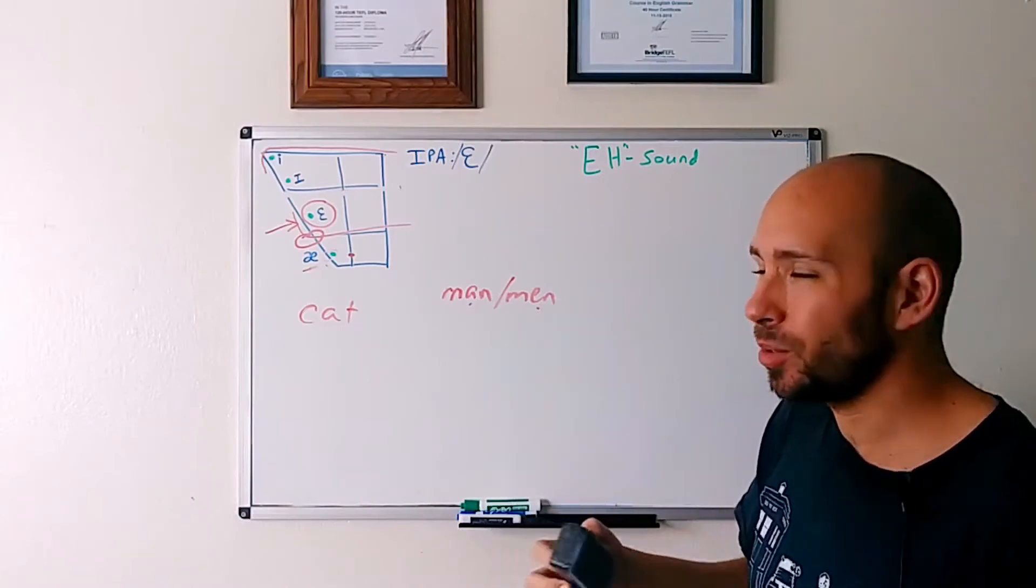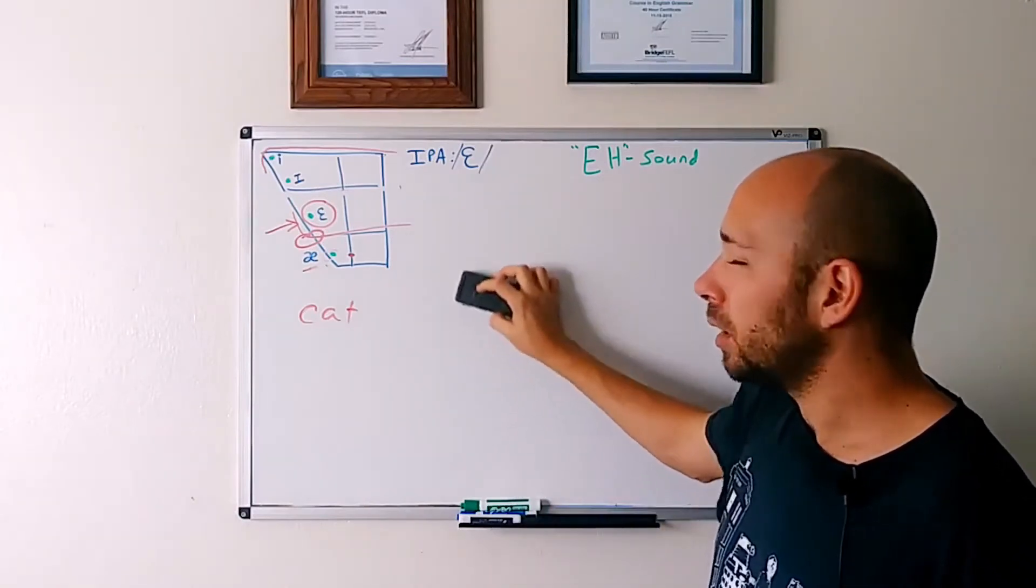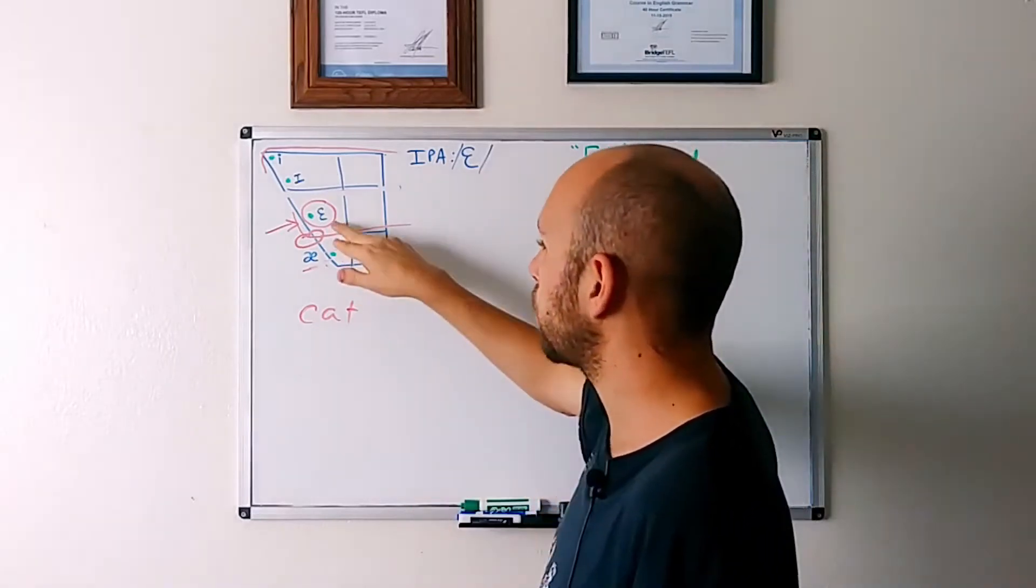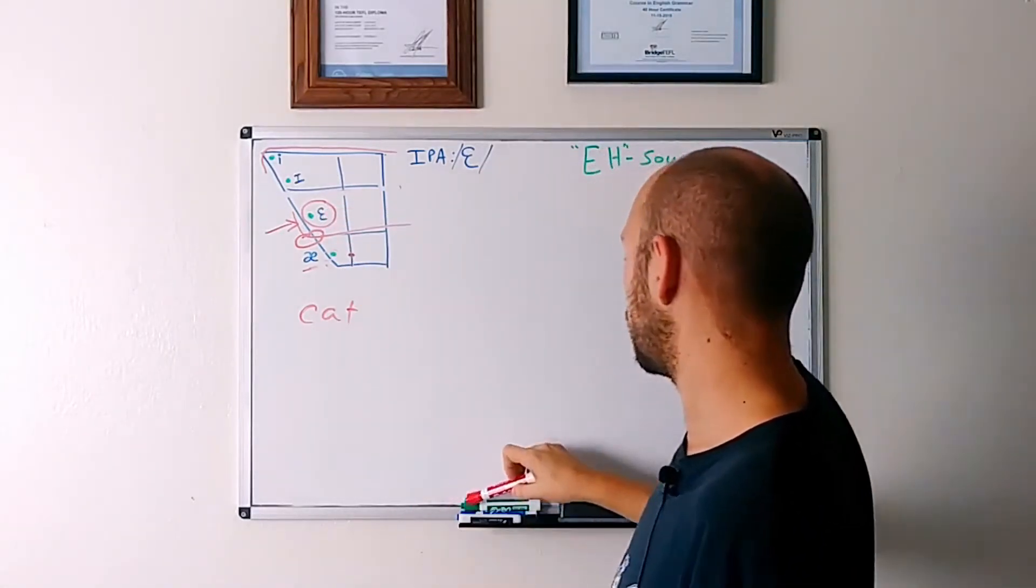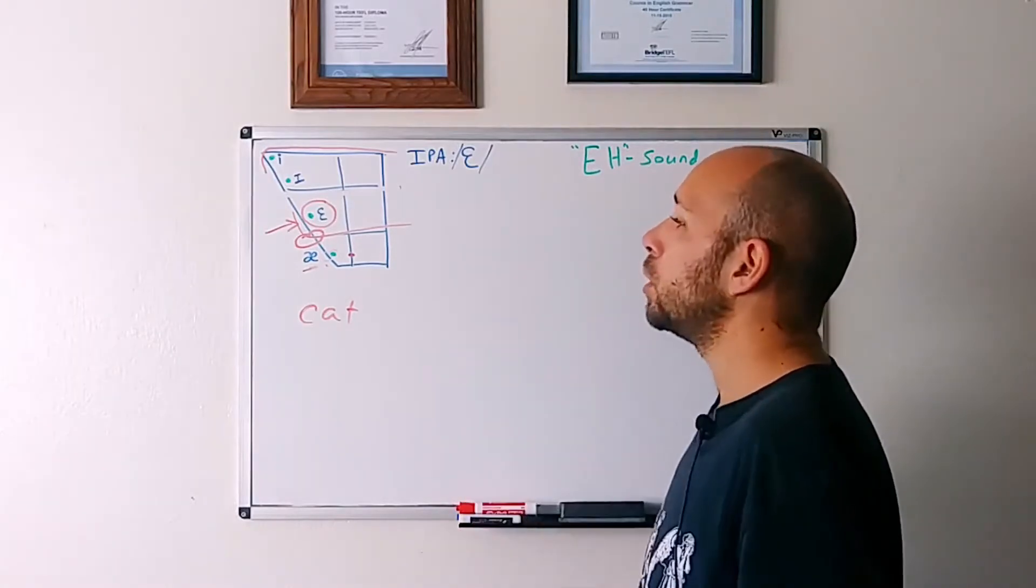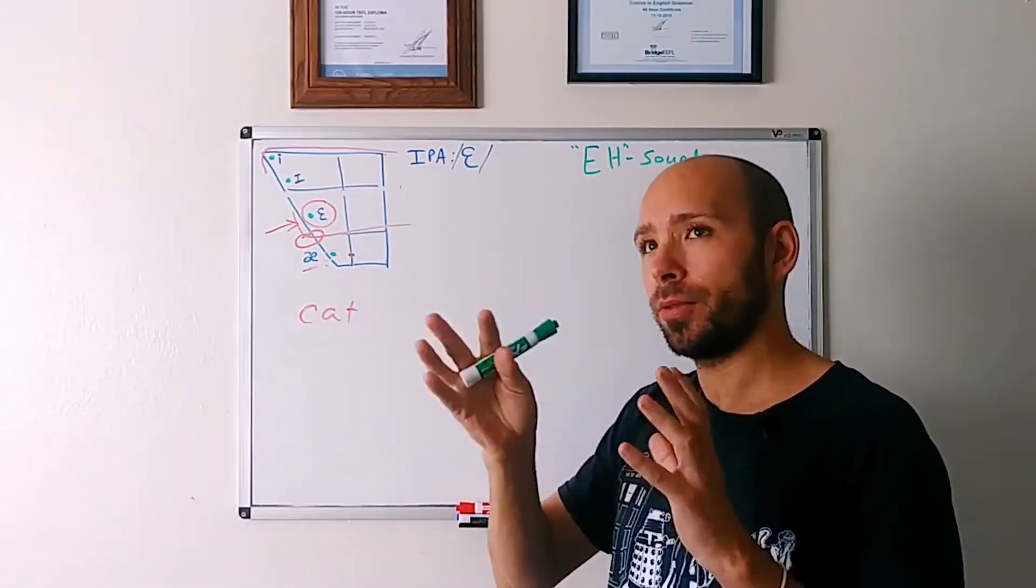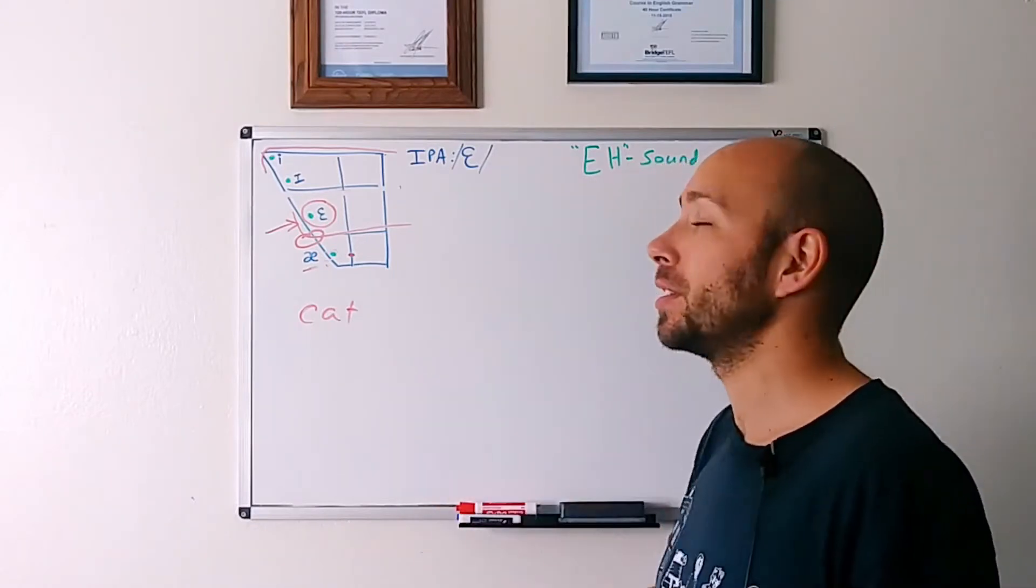If you say, I see two man, we understand you mean men. So the context can help, but it can cause a lot of problems being understood clearly. So very, very important. But right now we're just going to focus on this third sound, which should be pretty easy if you either have this sound or you have another sound that is very similar.